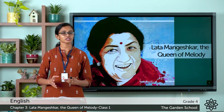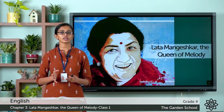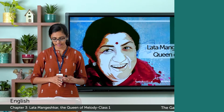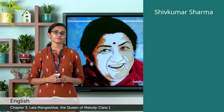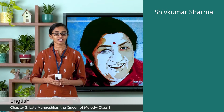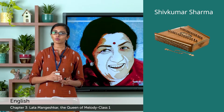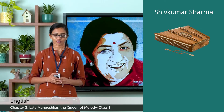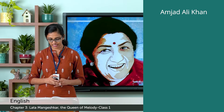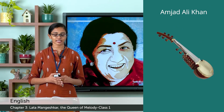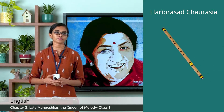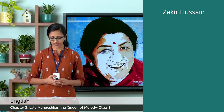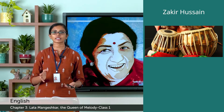Here you can see a few musicians. The names are mentioned but they are not matched — you have to match the right picture with the right name. Shiv Kumar Sharma is a famous music director and santoor player. Amjad Ali Khan is a famous sarod player and music director. Hari Prasad Chaurasia is a famous flautist and music director — the one who plays a flute is called a flautist. And Zakir Hussain is a very famous percussionist.